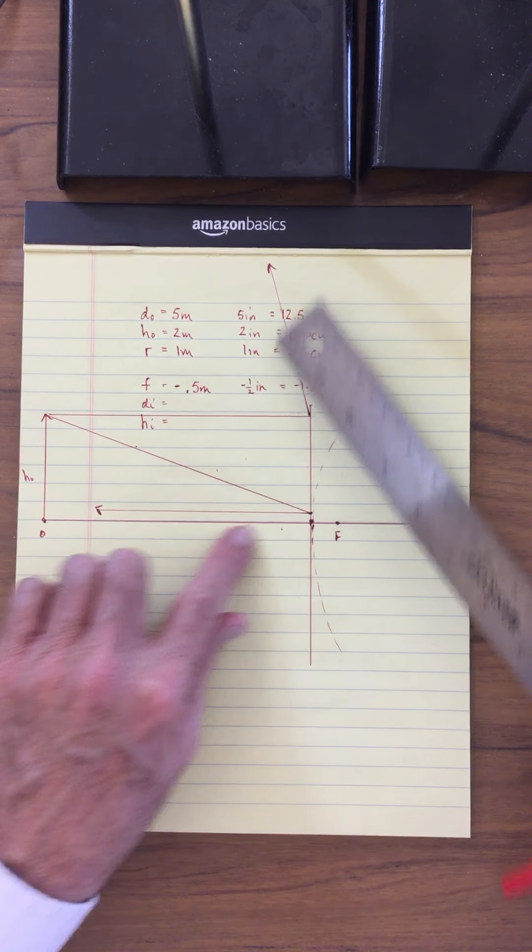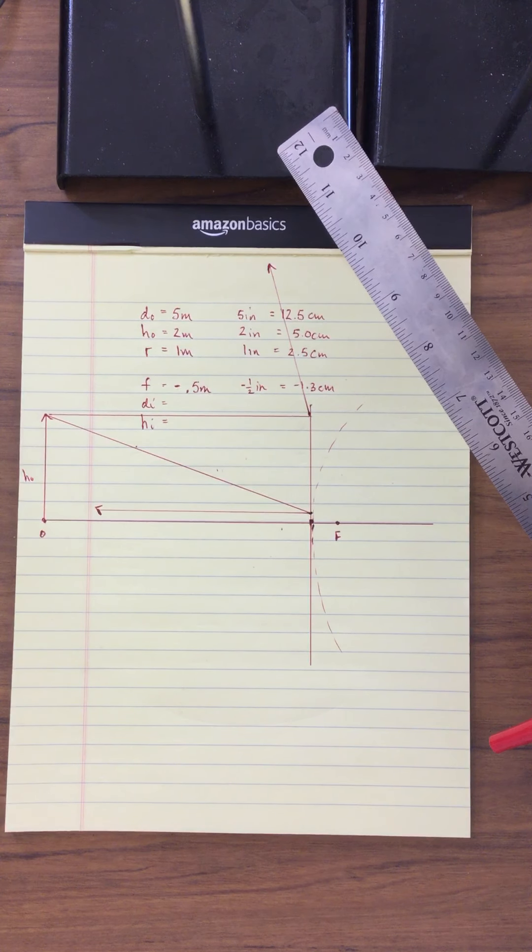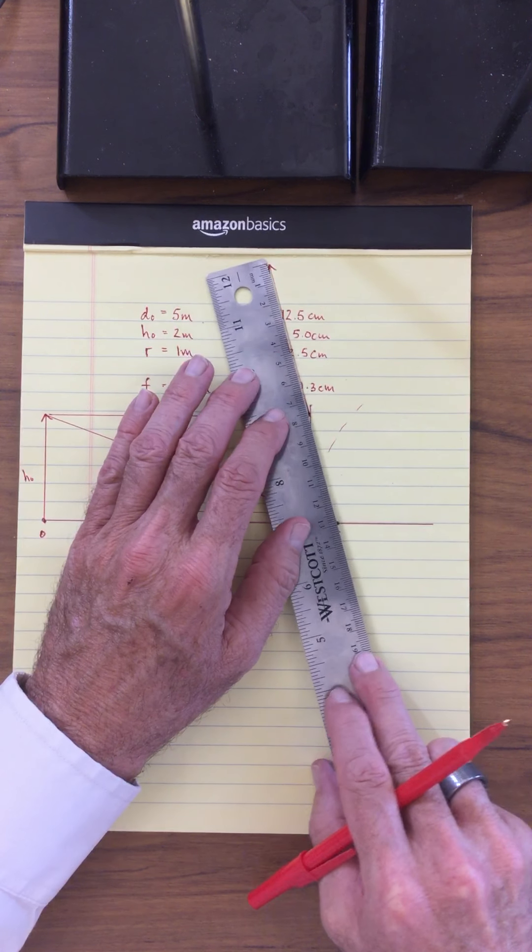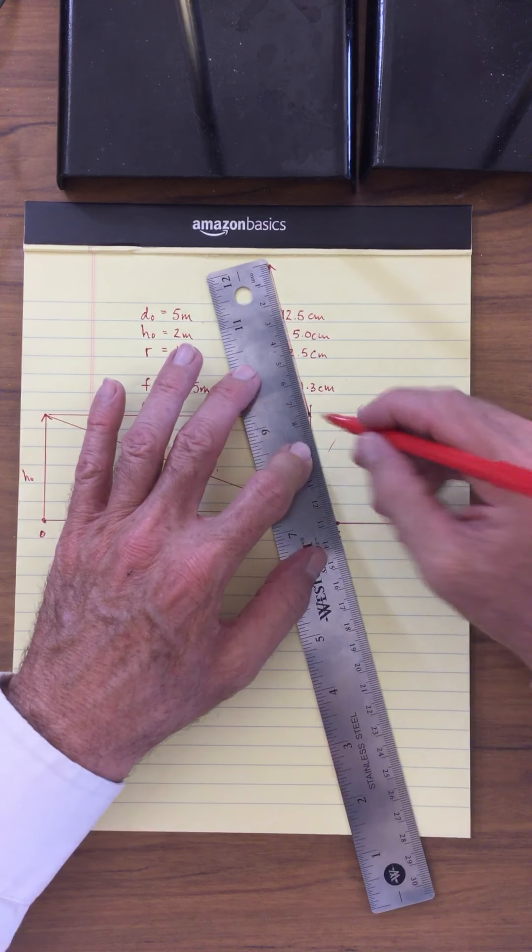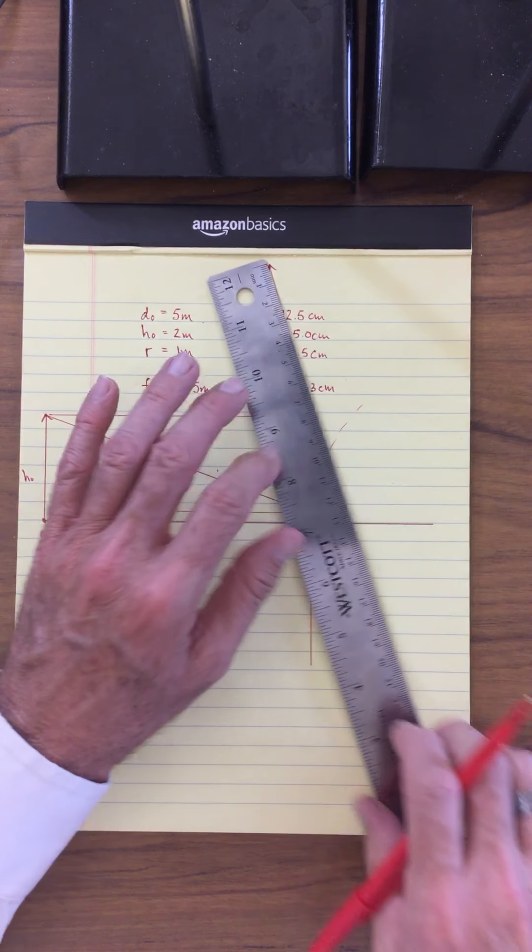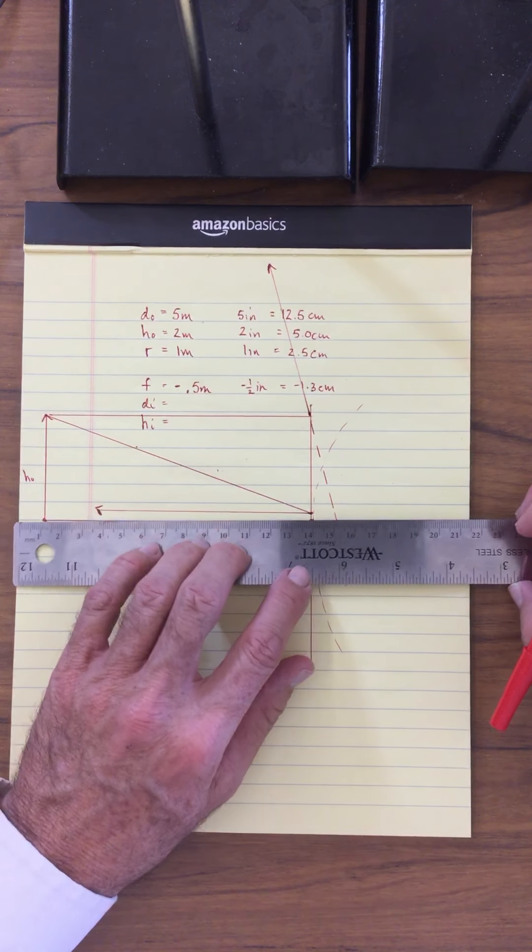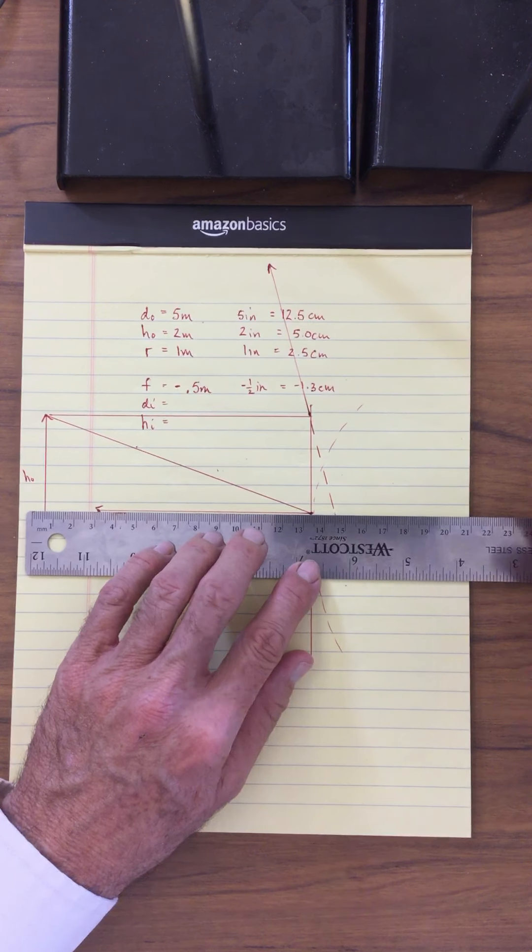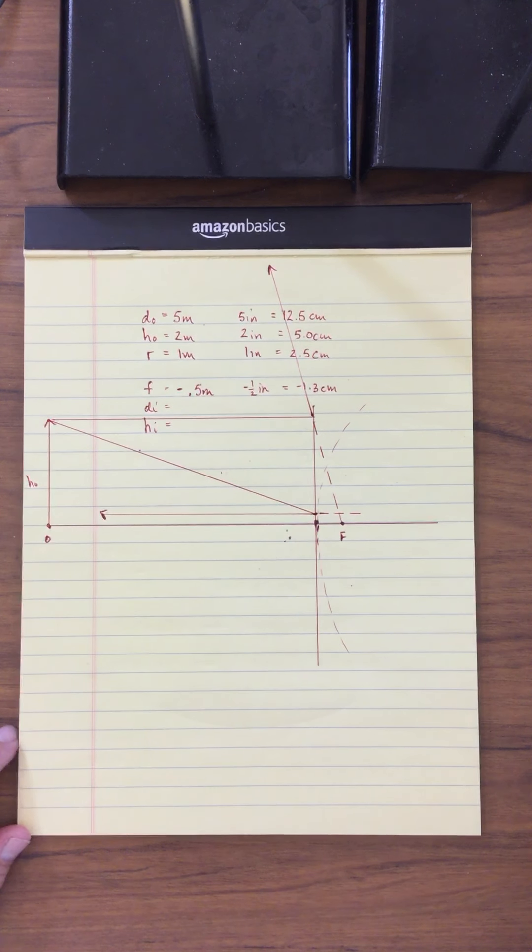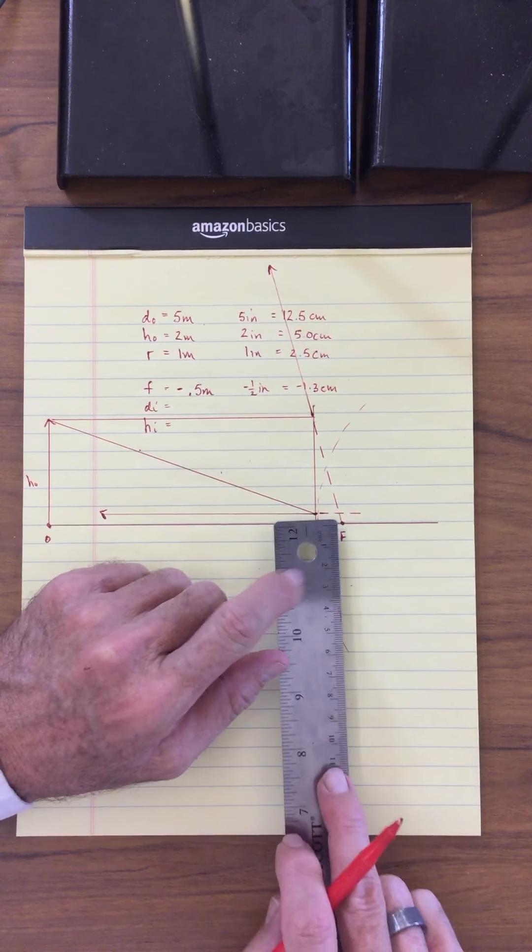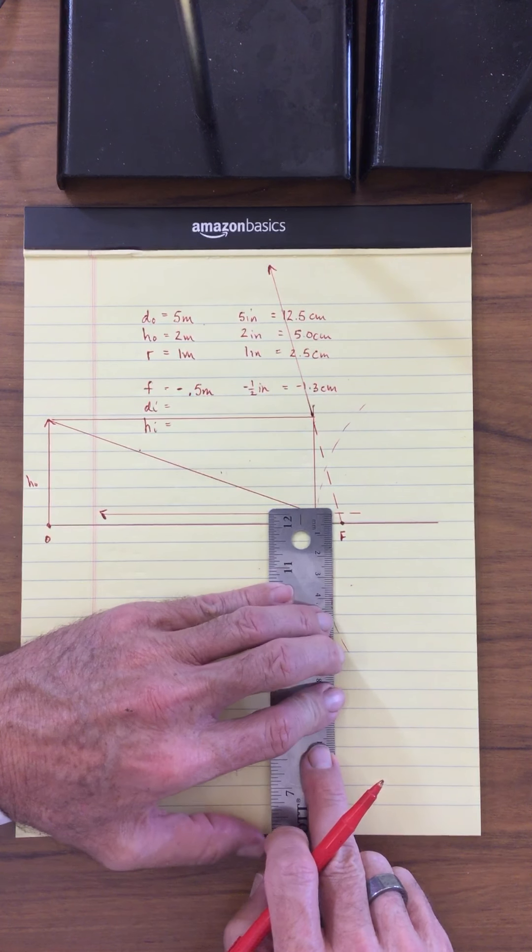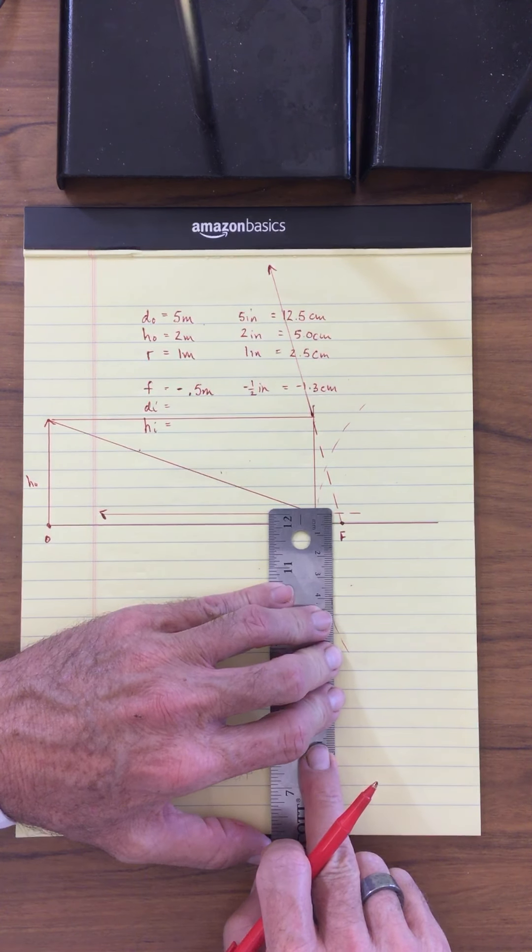So again, these are diverging. We will never see these converge. So we need to draw sight lines. So we'll draw sight lines back like this, and then a sight line back like that.